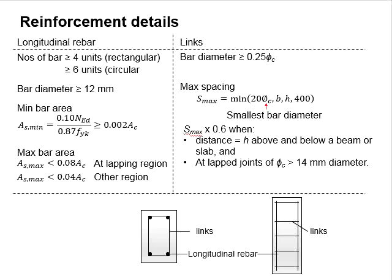For the reinforcement in columns, there are longitudinal rebar and the links. For square and rectangular columns, you need at least four units of longitudinal bar, one each at the corner.